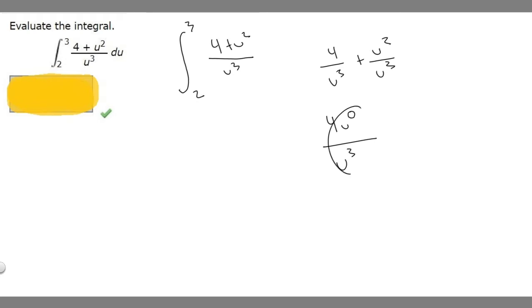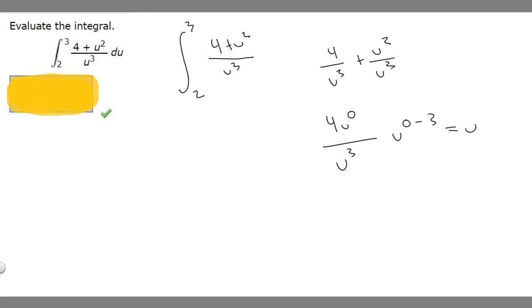Now we can use one of the exponent rules. If we have the same base raised to two exponents, we can rewrite it as u to the top exponent minus the bottom exponent. So this is u to the 0 minus 3, which is just u to the minus 3. And we're multiplying by 4, so we can rewrite 4 over u cubed as 4u to the minus 3.